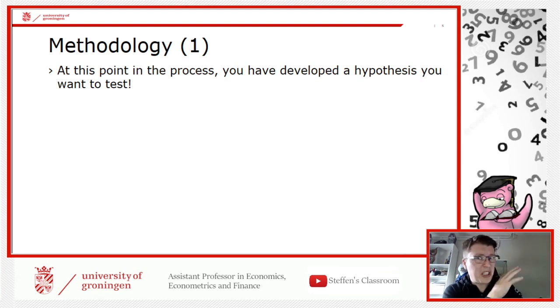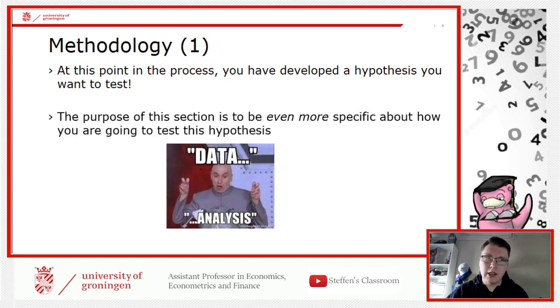Which brings us to the methodology section. At this point, you have, based on the literature, developed the hypothesis that you want to test. In this section, you're actually taking this hypothesis and being even more specific about how you're going to test it using data. You found a subject of interest, you found some related literature, and you've got an overview of what has been done and found, and you have then selected an empirical paper you like and understand.